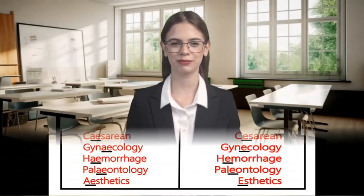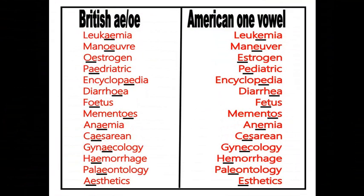British English keeps double vowels 'ae' and 'oe'; American English uses one vowel. Examples include: leukemia, maneuver, estrogen, pediatric, encyclopedia, diarrhea, fetus, and mementos.